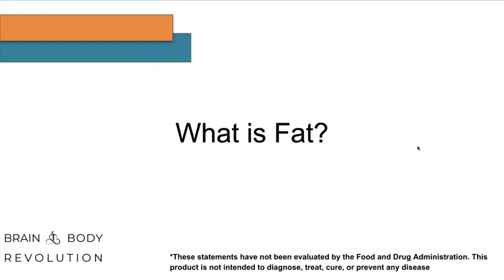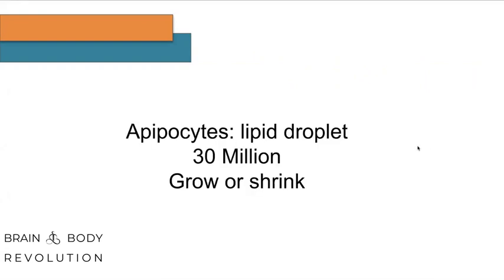So what is fat? Fat are cells called adipocytes. It's really a little droplet of fat — a lipid droplet with a little membrane around it. You have roughly 30 million of them in your body. 30 million things that I don't think are a mistake. I do believe everything's been put inside of you for a very specific reason, and to do things 30 million times, I think there's been some divine guidance as to why that's there.